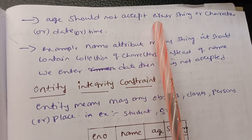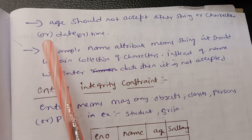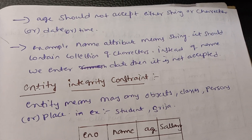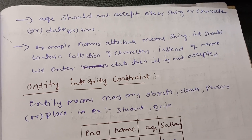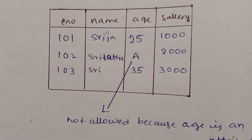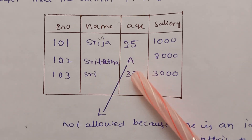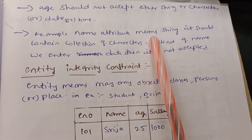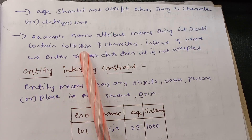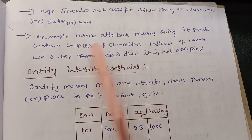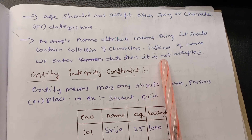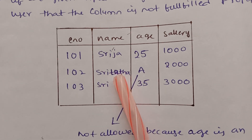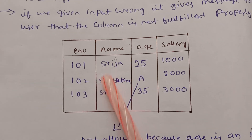Age should not accept strings, characters, or dates — age should only be integers. For example, the name attribute means string — it should be a collection of characters. If we enter a date instead of a name, it is not accepted. Each column accepts its specific data type only.